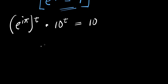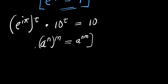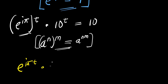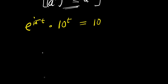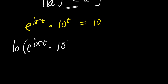Now, from here, if you have a to the power of n raised to the power of m, this equals a to the power of n times m. Applying this identity here, what you are going to have is e to the power of i times pi times t, times 10 to the power of t, equals 10. So what we can do now is to make use of natural log: natural log of e to the power of i times pi times t, times 10 to the power of t, equals natural log of 10.